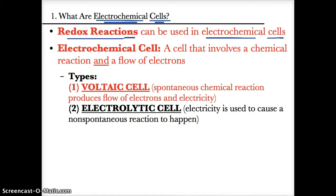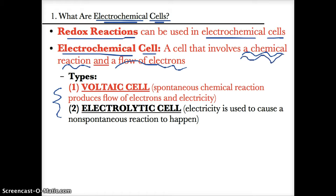What are electrochemical cells? Electrochemical cells are cells where you have a chemical reaction that is somehow related to a flow of electrons. Depending on what type of electrochemical cell you have, you can either have a chemical reaction leading to a flow of electrons, or a flow of electrons leading to a chemical reaction.